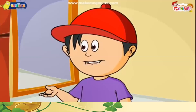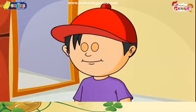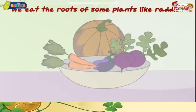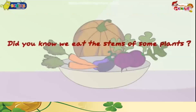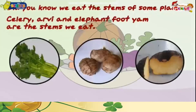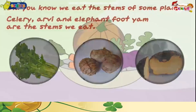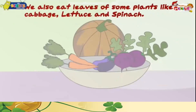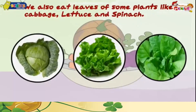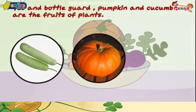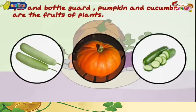Plants give us vegetables too. We eat the roots of some plants like radish, carrot, and turnip. We also eat the stems of some plants — celery, arvi, and elephant foot are stems we eat. We also eat leaves of some plants like cabbage, lettuce, and spinach. Bottle gourd, pumpkin, and cucumber are the fruits of plants which we eat as vegetables, but they are technically fruits.